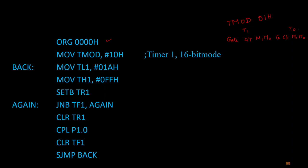For Timer 1 in Mode 1 (16-bit): Gate = 0 (no external pulse), C/T-bar = 0 (timer mode), M1 = 0, M0 = 1 (Mode 1). All Timer 0 bits remain 0. This gives TMOD = 10H. So we load TMOD with 10H to configure Timer 1 in Mode 1.